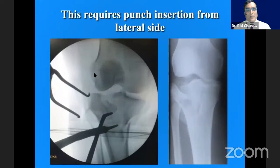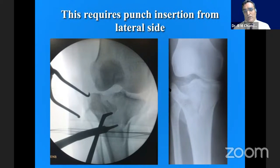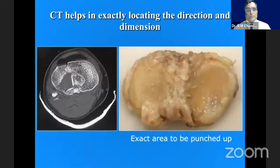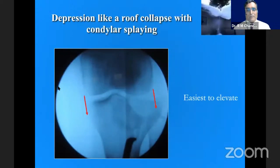This requires a punch from the lateral aspect — you cannot elevate it with a medially inserted punch. This fragment would go up with a laterally inserted punch. Here I would introduce a K-wire and with the K-wire joystick it back into position. The exact area to be punched is given by the CT section so that we can precisely elevate the depressed fragment.